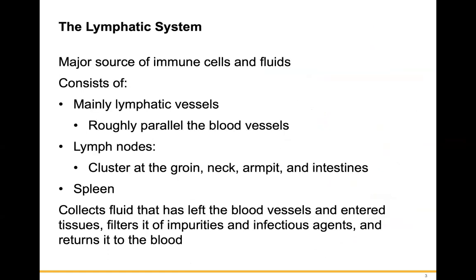The lymphatic system is a major source of immune cells and fluids, consisting mainly of lymphatic vessels roughly parallel to the blood vessels. Lymph nodes are clustered at the groin, neck, armpit, and intestines, and the spleen is also part of this system. It collects fluid that has left the blood vessels, filters it of impurities and infectious agents, and returns it to the blood.